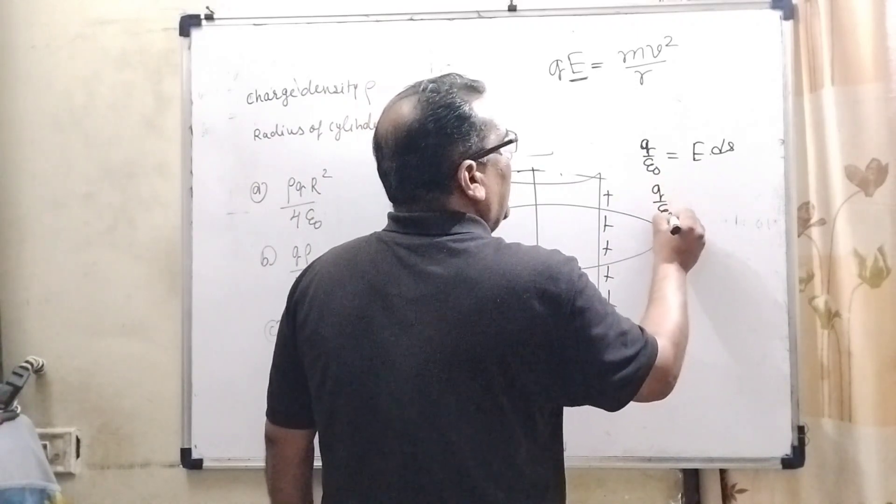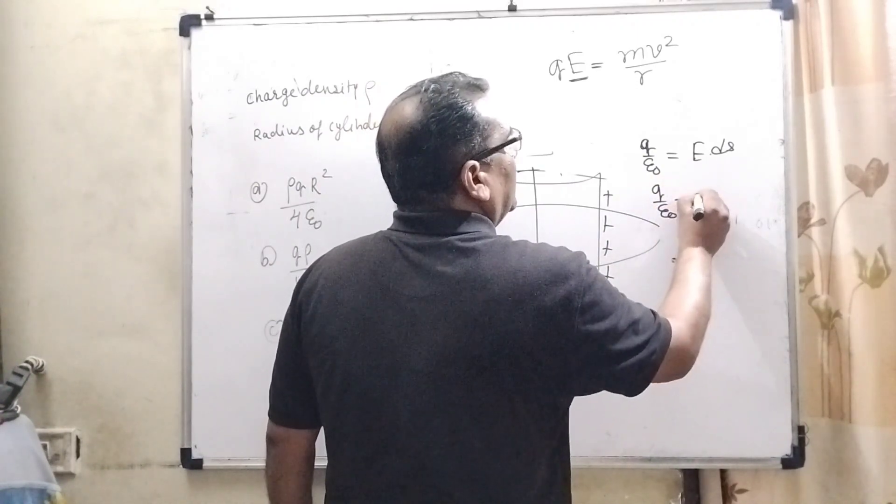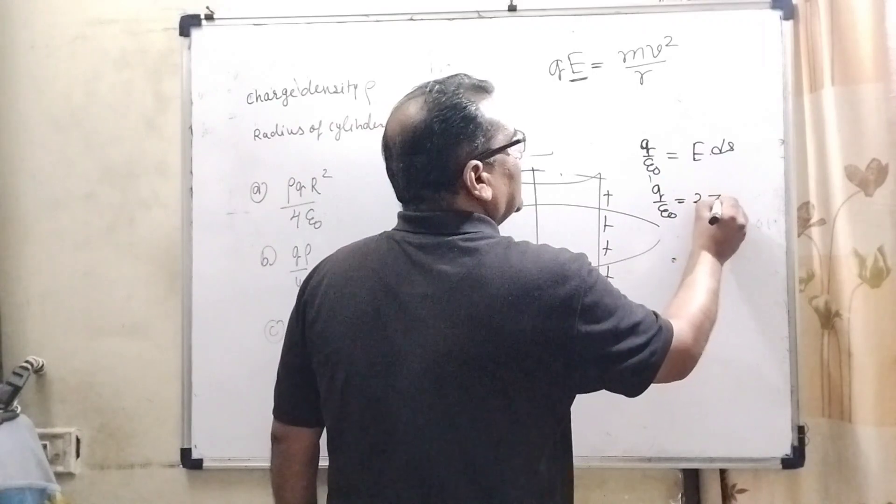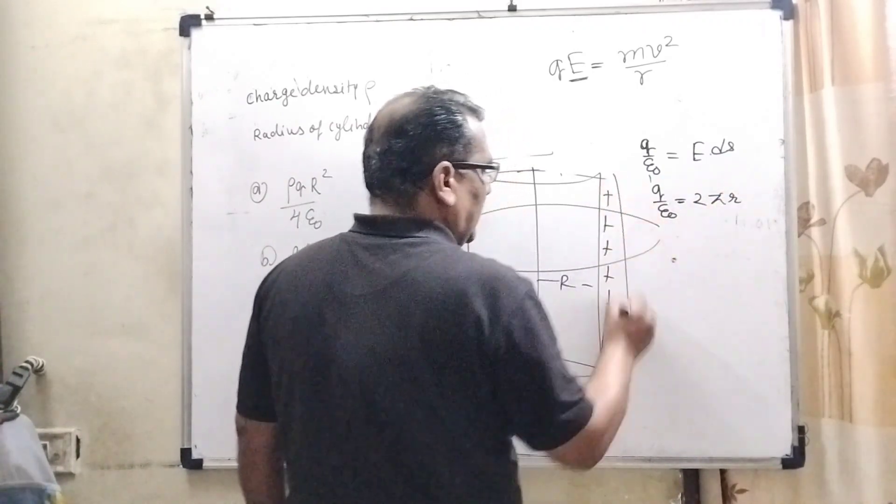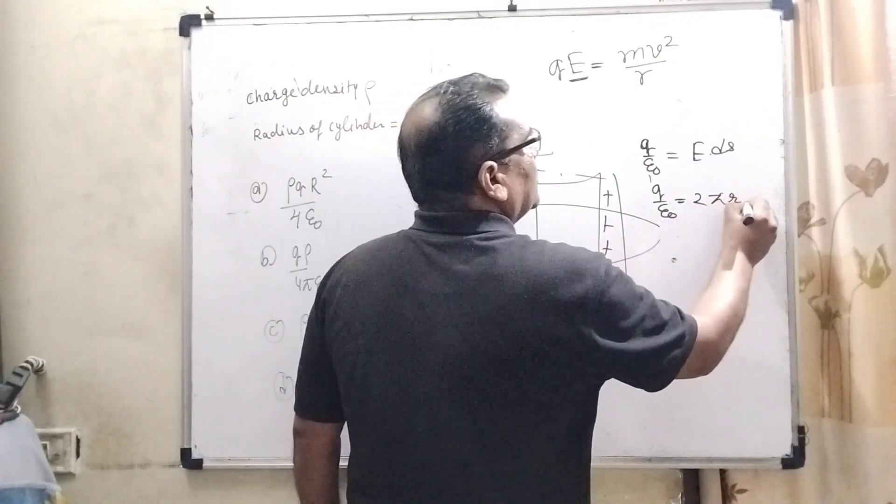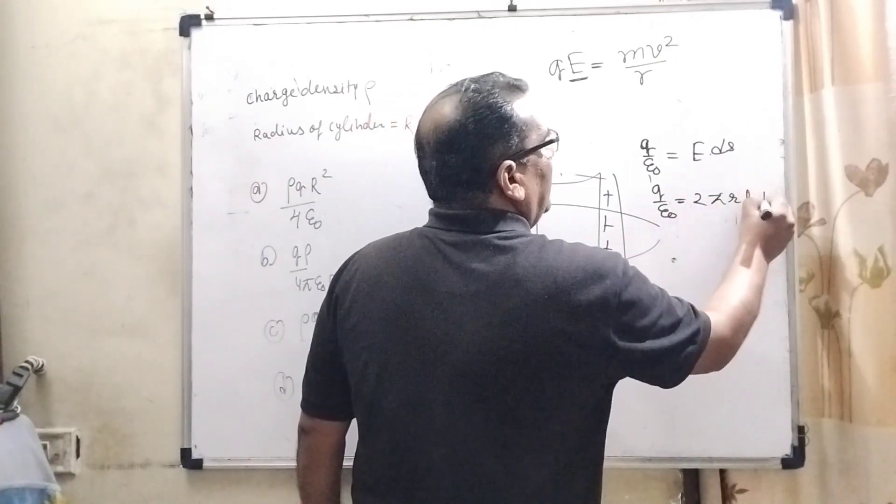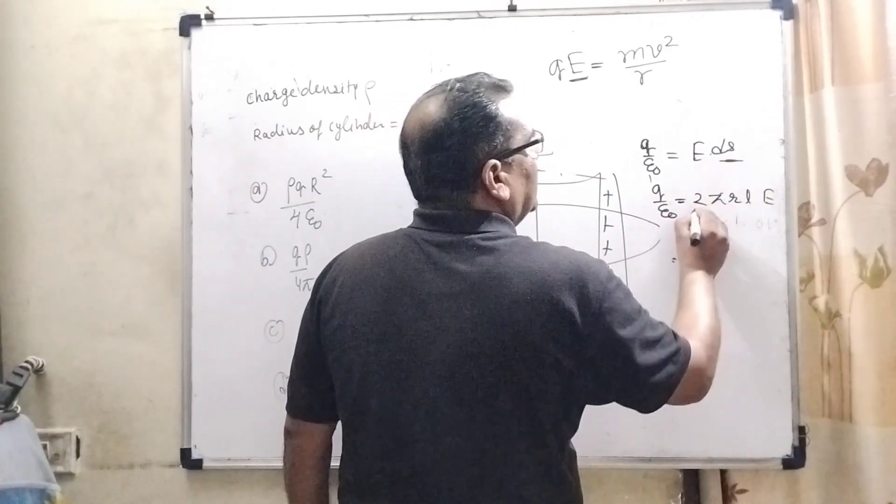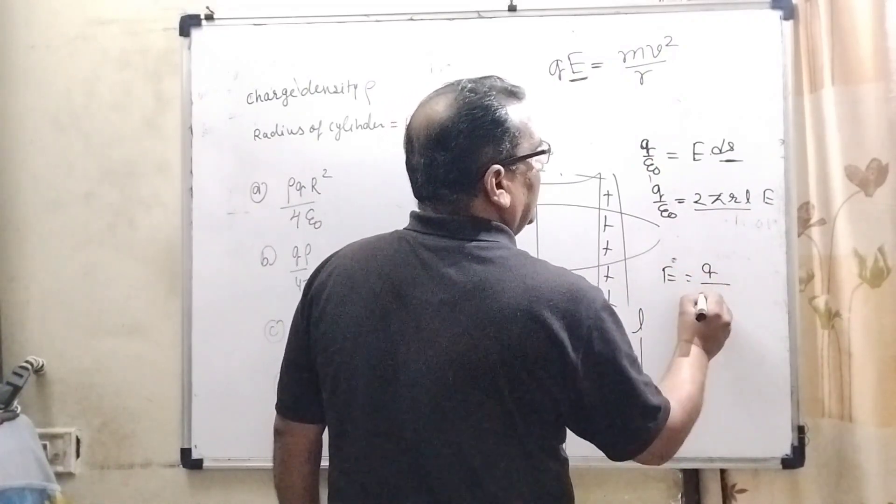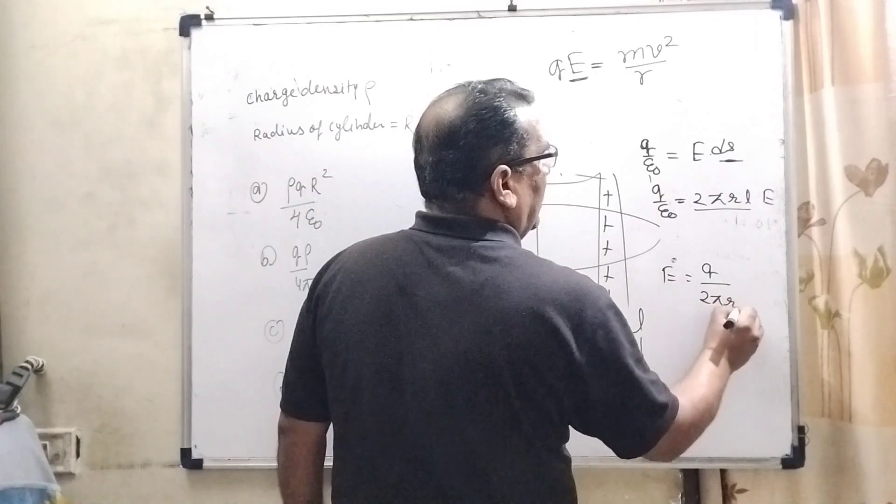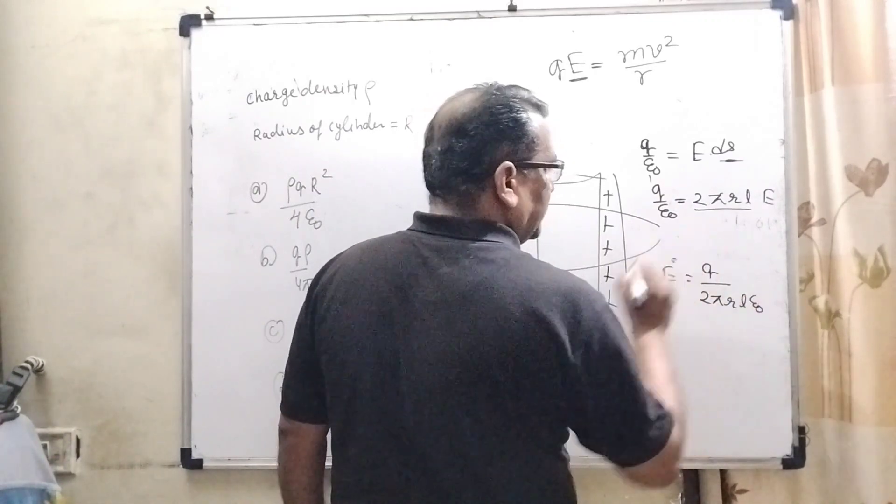So here, Q/ε₀, and here the Gaussian surface that is considered is 2πrL. So Q/ε₀ = E·2πrL. Now E = Q/2πrLε₀.